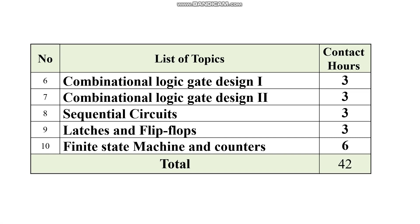In module six, we will cover combinational logic gate design part one, focusing mostly on mathematical logic design units. We will design adders, subtractors, multipliers, and dividers, and discuss fundamental aspects of the arithmetic logic unit. In module seven, combinational logic gate design part two, we will consider other combinational circuits such as comparators, encoders, decoders, and multiplexers.